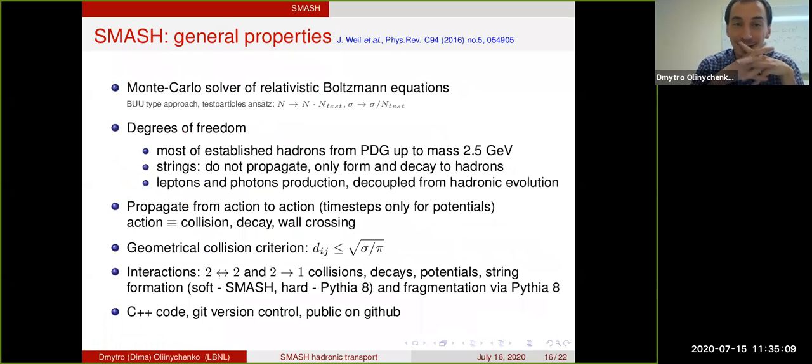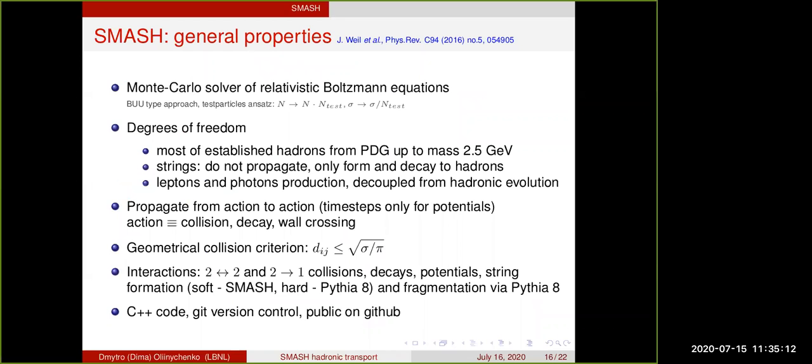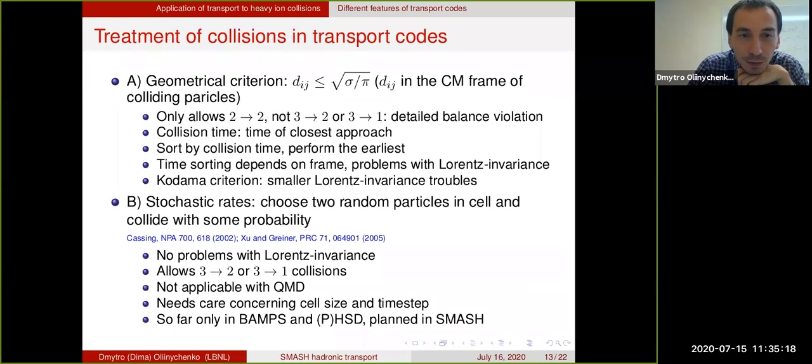One question from Lauren Casper: can you define stochastic rates? Stochastic rates means that to collide two particles, you are creating some kind of cell, then you are choosing two random particles in the cell, and then you are saying these two particles are going to collide with some probability. You calculate the probability, you throw a dice, and if it's matching this probability then you have a collision, otherwise you don't. So stochastic rates is the way to treat collisions.